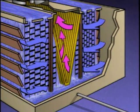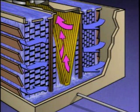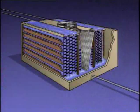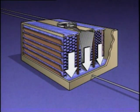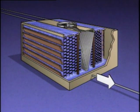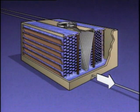The drift eliminator traps water droplets that could be carried along with the air as it passes out of the tower. By the time the water reaches the catch basin, it's cooled. The cooled water is then drawn out of the tower through the outlet line and pumped back to plant equipment for reuse.